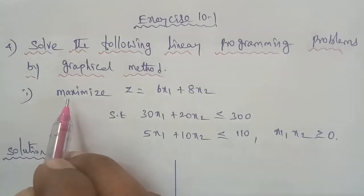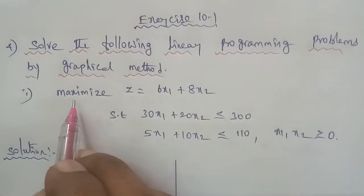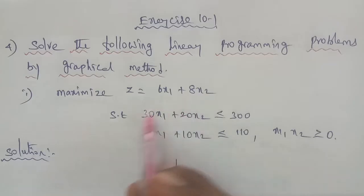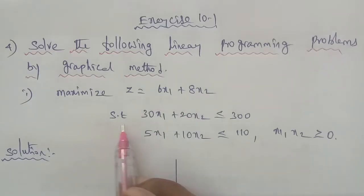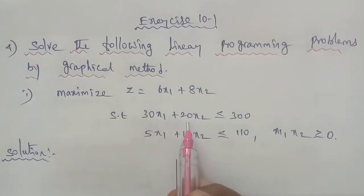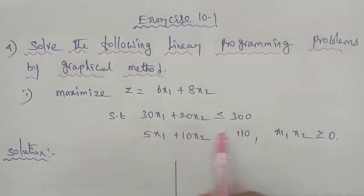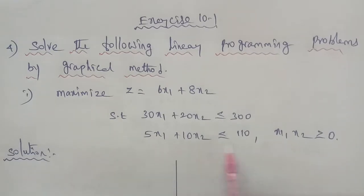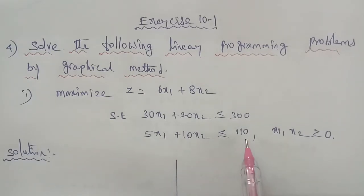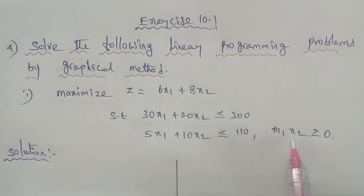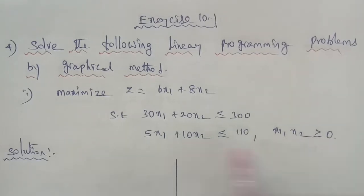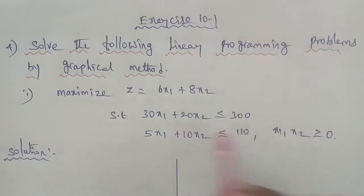Sub-section 1, 4th sub-section 1. Maximize Z is equal to 6x1 plus 8x2, subject to the constraints: 30x1 plus 20x2 less than or equal to 300; 5x1 plus 10x2 less than or equal to 110; x1, x2 greater than or equal to 0. So x1, x2 are both positive numbers.